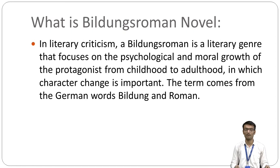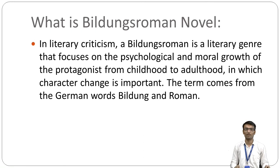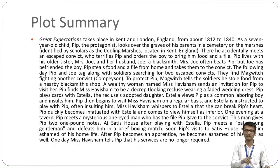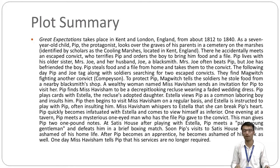Now let us look at the plot summary in detail. Great Expectations takes place in Kent and London, England, from about 1812 to 1840. As a seven-year-old child, Pip, the protagonist, looks over the graves of his parents in a cemetery on the marshes, identified as the cooling marshes located in Kent, England. There he accidentally meets an escaped convict who terrifies Pip and orders the boy to bring him food and a file. Pip lives with his older sister Mrs. Joe and her husband Joe, a blacksmith. Mrs. Joe often beats Pip, but Joe has befriended the boy. Pip steals food and a file from home and takes them to the convict. The following day, Pip and Joe tag along with soldiers searching for two escaped convicts. They find Magwitch fighting another convict, Compeyson. To protect Pip, Magwitch tells the soldiers he stole food from a nearby blacksmith shop.